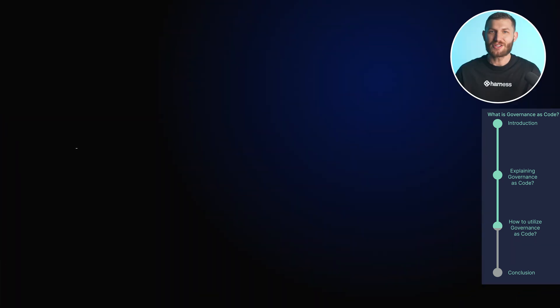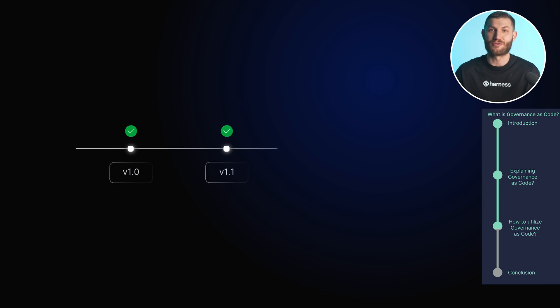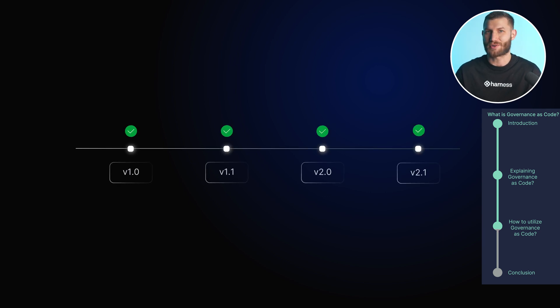Then there's the need for version control. Managing governance as code means tracking changes, reviewing them, and keeping an audit trail. This ensures that you can roll back to previous versions when necessary and maintain accountability throughout the process.